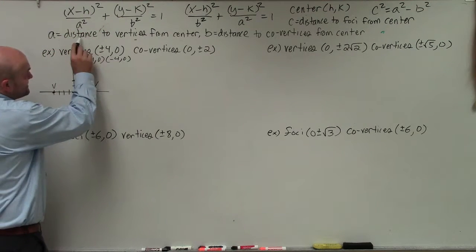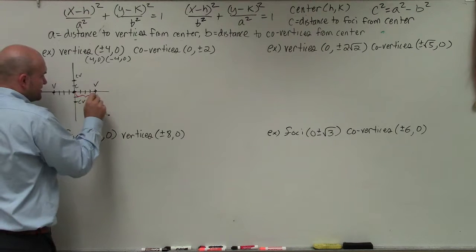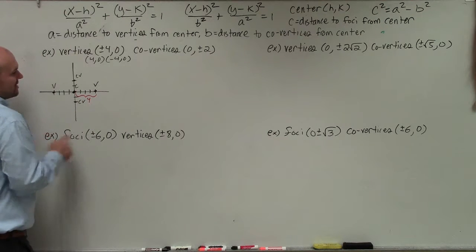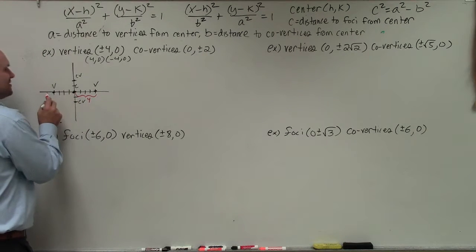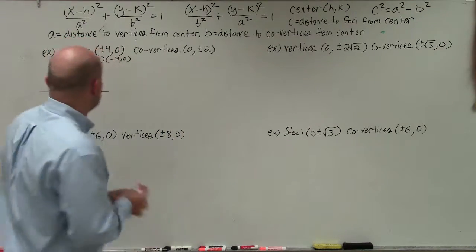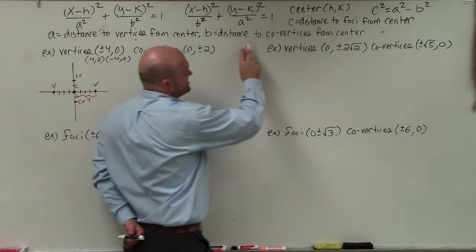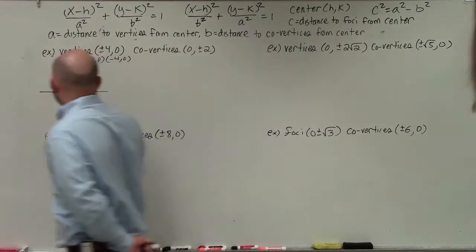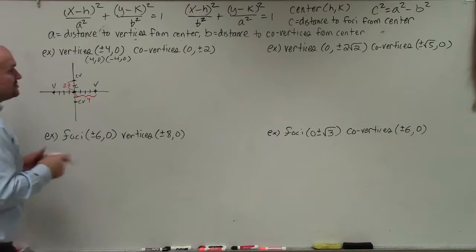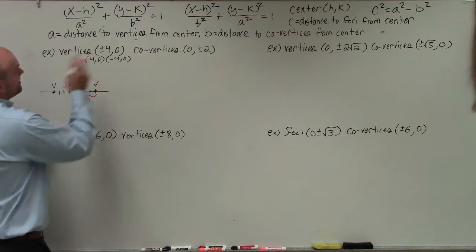Remember, a is the distance from the center to the vertices — traveling from the vertex to the center is 4. You might say you're traveling negative 4, but it's the absolute distance, not direction. Co-vertices, or b, represent the distance from the co-vertices to the center. Looking at those points, that distance is 2. So now I simply plug the information into my equation.